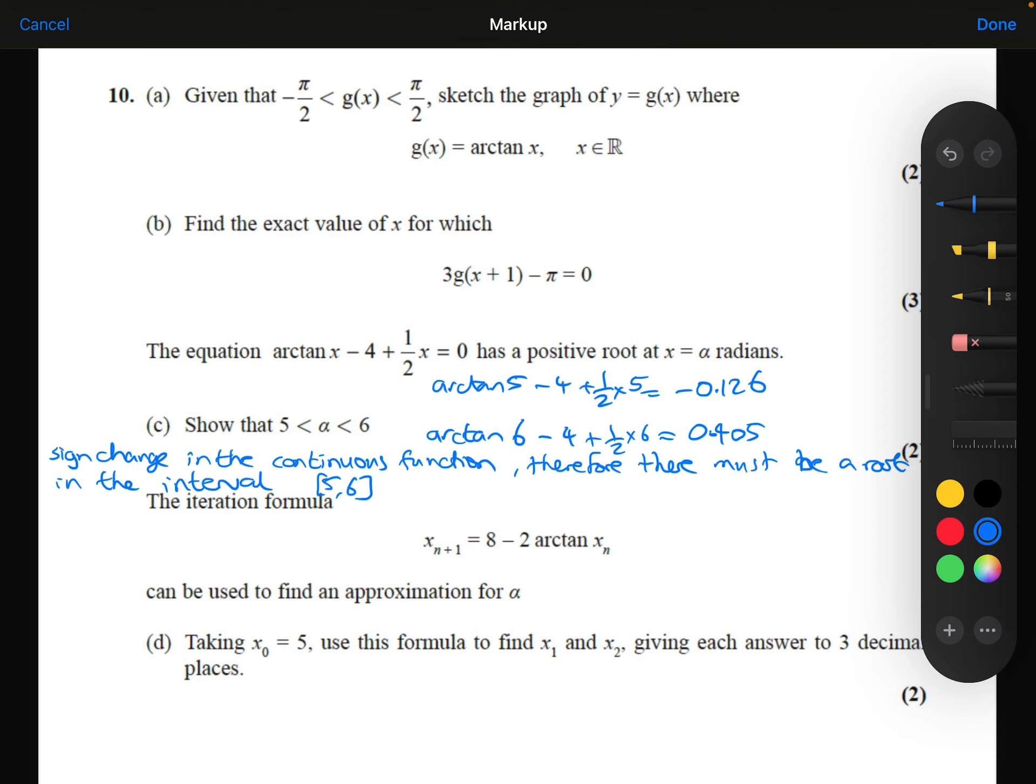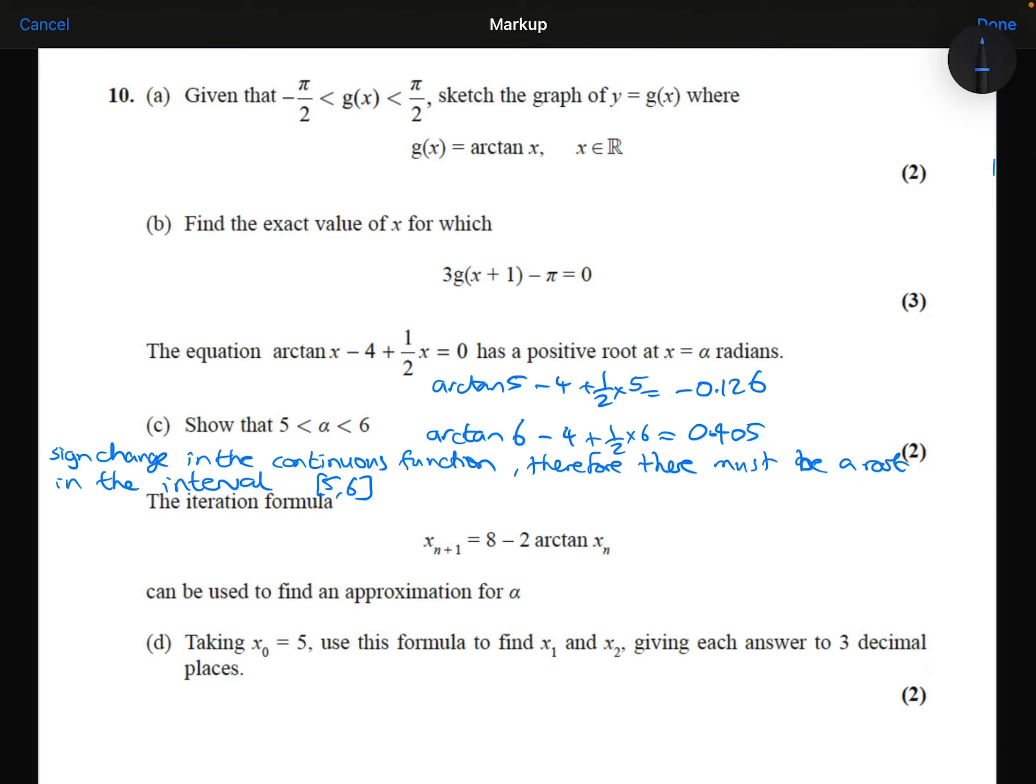So I'm going to write part D. We're told that the iterative formula, xn plus 1 is equal to 8 minus 2 arctan xn, can be used to find an approximation for alpha. Taking x0 is 5, use this formula to find x1 and x2, giving each answer to three decimal places.